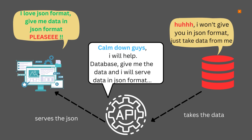The front end takes the JSON and shows the videos and data related to those videos — like likes and comments — to the user. To recap the flow: we want to show videos to the user, but the video is stored in the database. The API takes the data, serves the JSON, and the front end takes the JSON and shows the videos to the user.